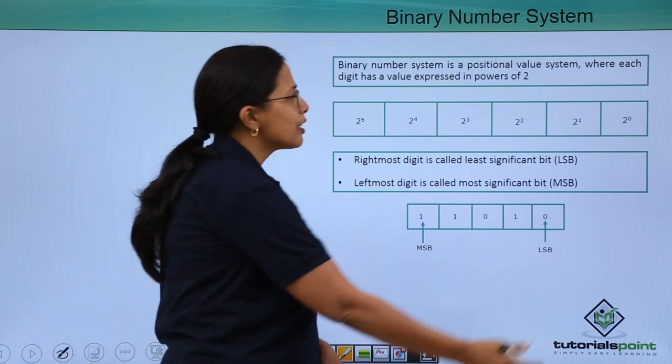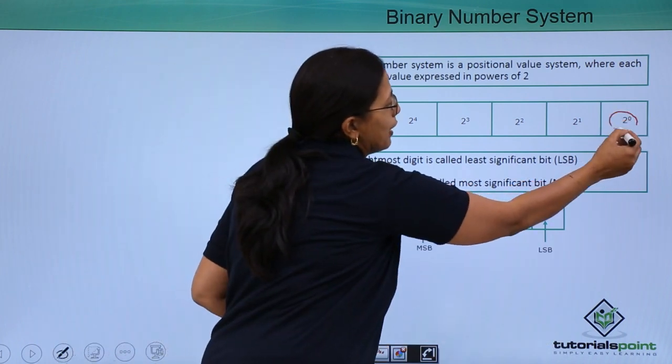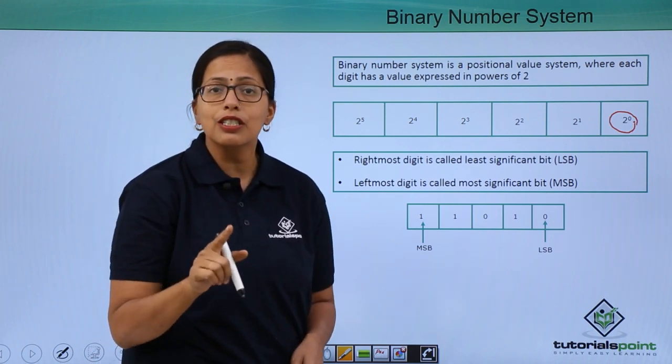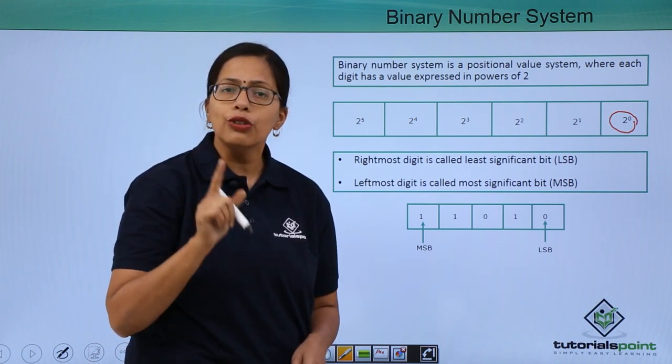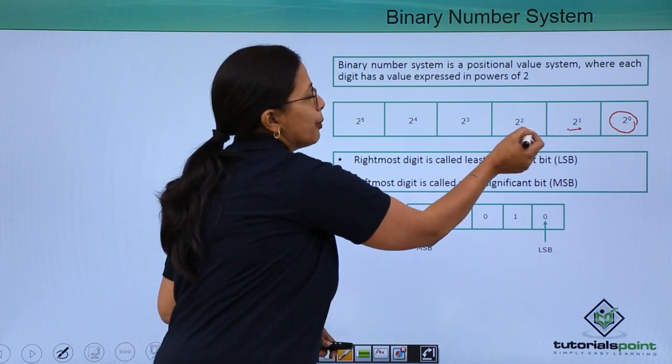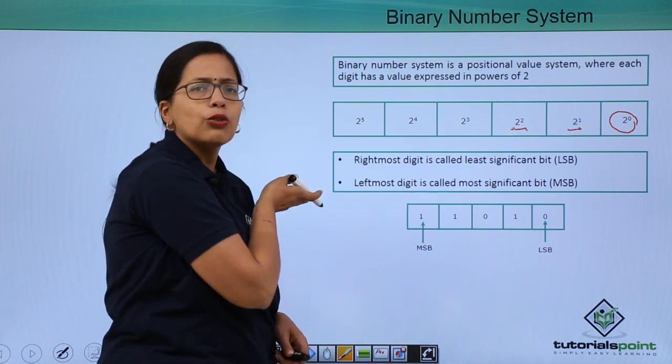The position is again calculated in the same way, rightmost 2 to the power of 0. Remember, it's a binary number system, just two digits, so 2 to the power of 0. We proceed, 2 to the power of 1, 2 to the power of 2, and so on.